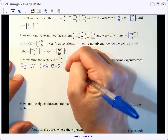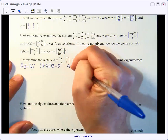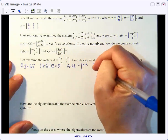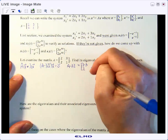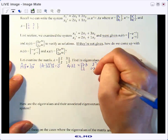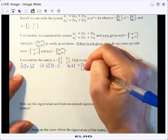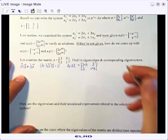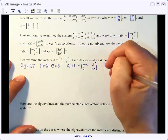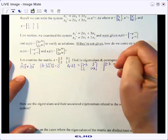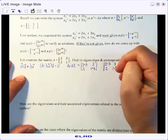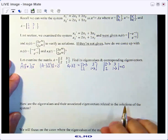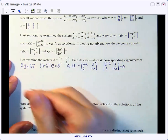So we remember that we needed to work with the A minus lambda I matrix, which would be 2 minus lambda, 3, 2, 1 minus lambda, and to find the interesting eigenvalues, we need to take the determinant of this matrix and set it equal to zero. So if I take the determinant of 2 minus lambda, 3, 2, 1 minus lambda, and set that equal to zero, I will end up with my characteristic equation.